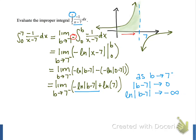If we multiply this by negative 1, then negative natural log of the absolute value of b minus 7 approaches positive infinity, as b gets closer and closer to 7 from the left side. So when we take a value that's approaching infinity, and add natural log of 7 to it, that result will also increase without bound, and so we get a result of infinity for our limit.